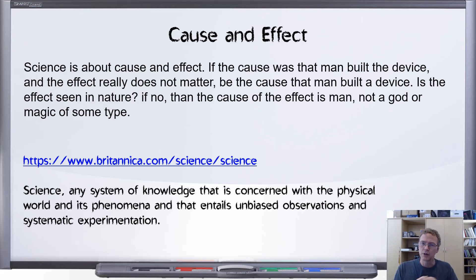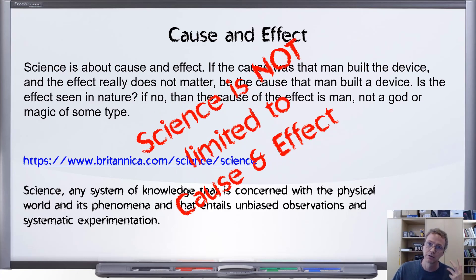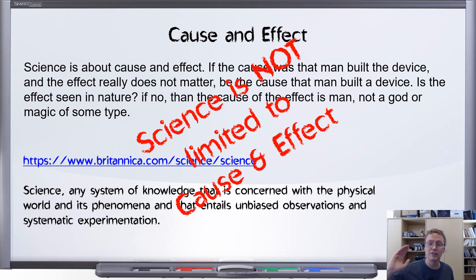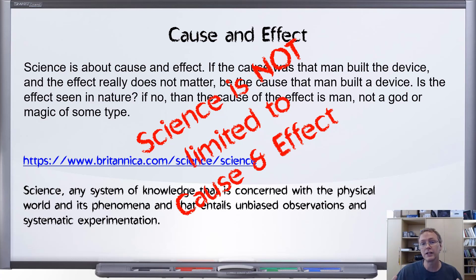Science isn't so restrictive. Science is not limited to cause and effect — science is many things. Science includes unbiased observations, science includes systematic experimentation, and yes, science does include cause and effect — but not always. Correlations are valid, straight-up measurements are valid, the initial observation where we draw no conclusions at all — those are all part of science, part of the scientific process, part of the body of knowledge that is considered science.